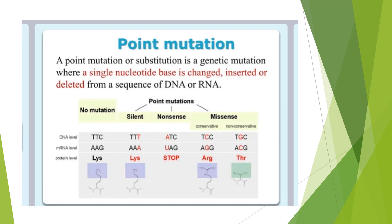The first type is point mutation. A point mutation is also called a substitution. It is a type of mutation in which only a single nucleotide base is changed. Remember that in the case of point mutation, only a single nucleotide base is changed.